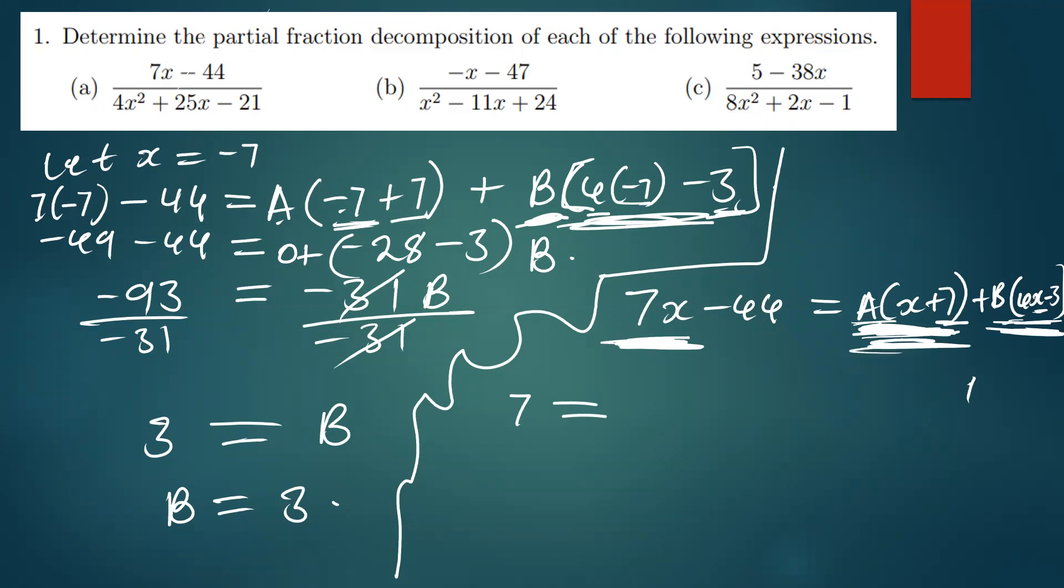Here you get a times x, you're getting ax. So a times x, you're getting ax, so we write a there. And then b times 4x, we're going to get...